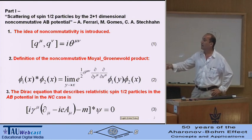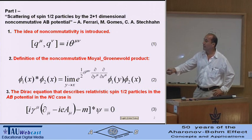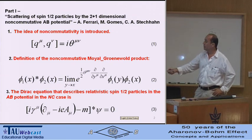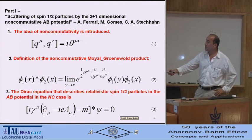In a relativistic situation, I use a Dirac equation in the non-commutative Aharonov-Bohm potential given by equation three. The star product acts only in this equation between A-mu and psi.